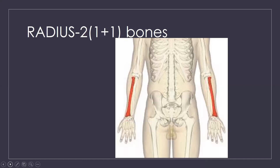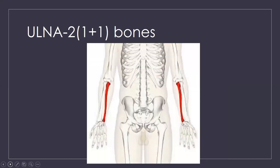Next is the ulna. The ulna is located just nearby the radius. They are close to each other. One plus one equals two, so two ulna bones — one on the right side and one on the left side of your hand.